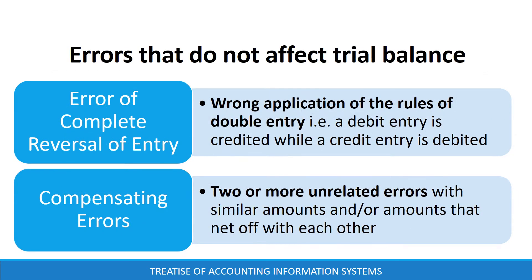Error of complete reversal of entry occurs due to wrong application of the rules of double entry — that is, instead of debiting, you credit, or instead of crediting, you debit. Compensating errors are multiple unrelated errors with similar amounts, or amounts that net off at the end of the day.